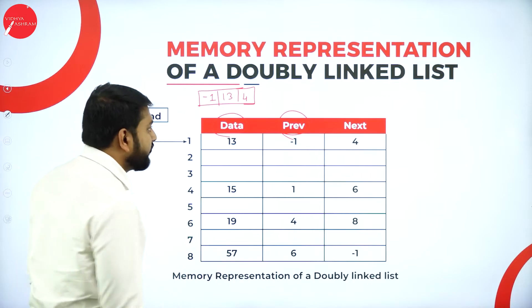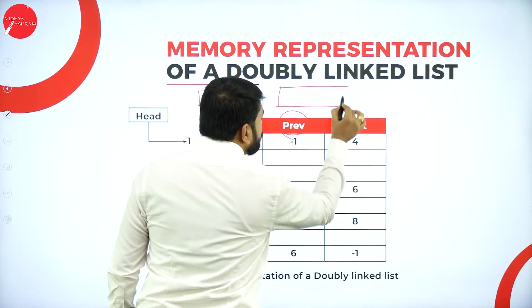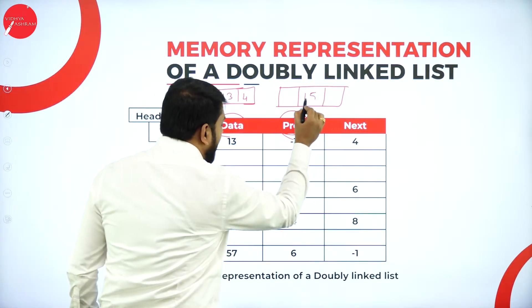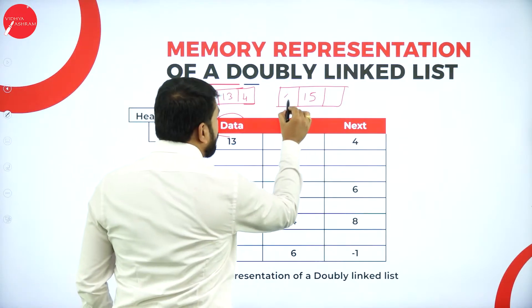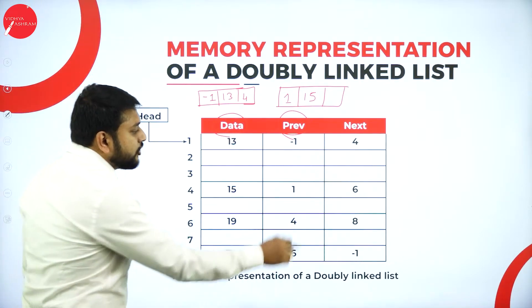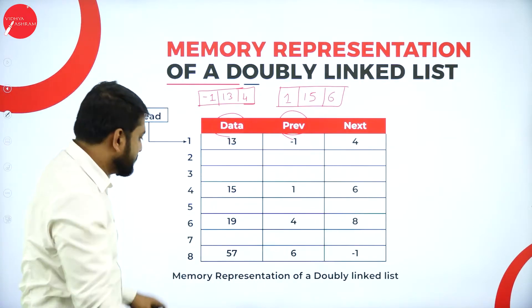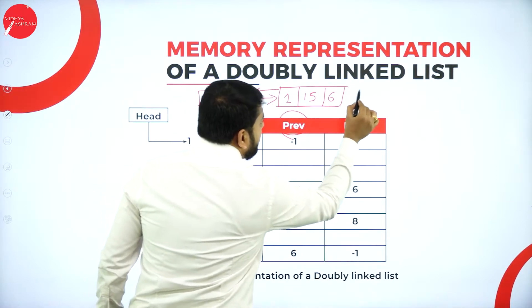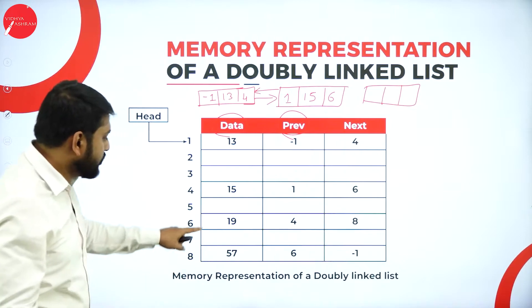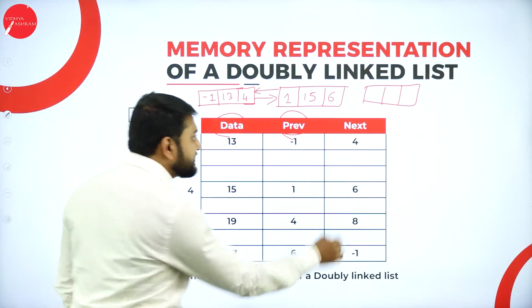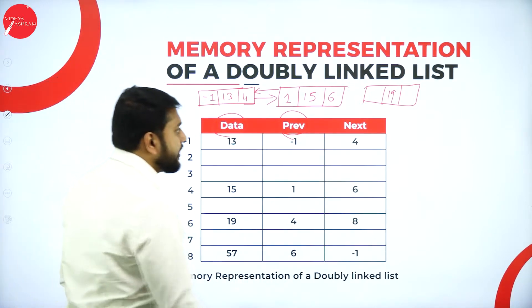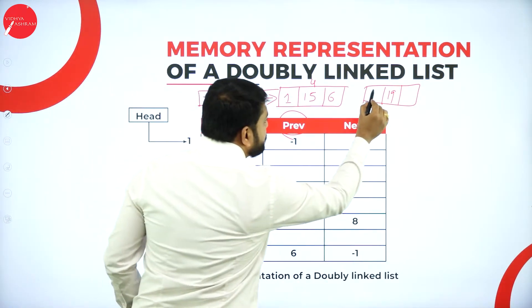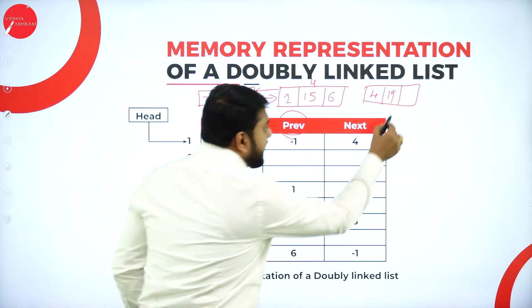The next node is at address 4. It has data 15, previous address 1 (address of the prior node), and next address 6. Then at address 6 we have data 19, previous address 4, and next address 8.